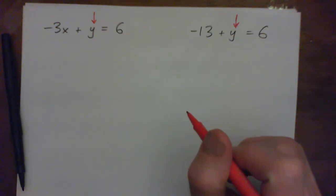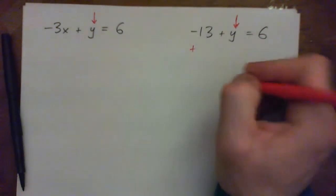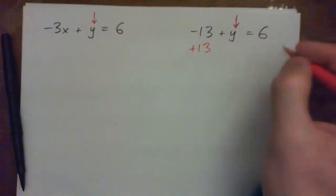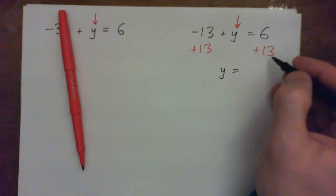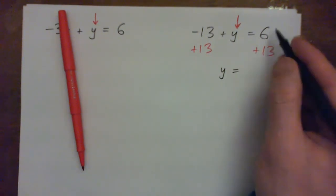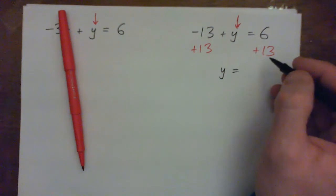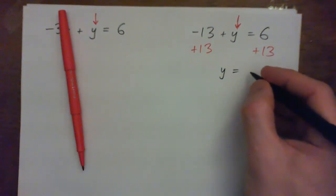You would add 13 to both sides wouldn't you? Just add 13. Yep and so y would equal 6 plus 13 which is 19. Or 13 plus 6, 6 plus 13. Same thing right?